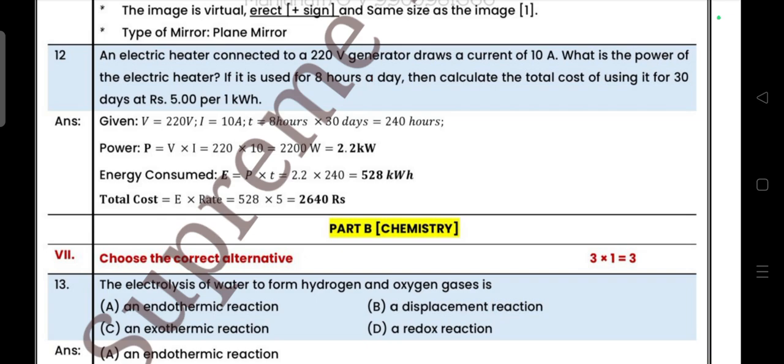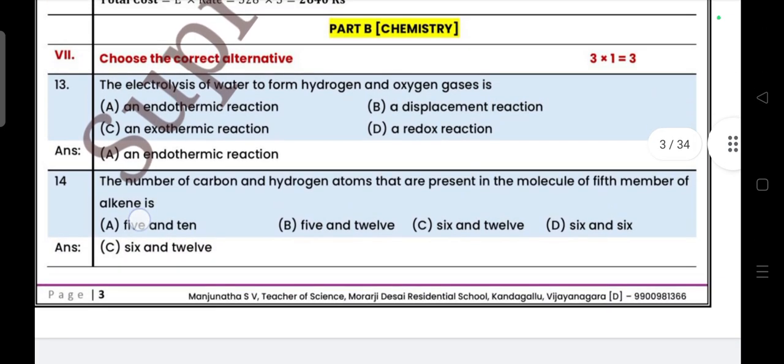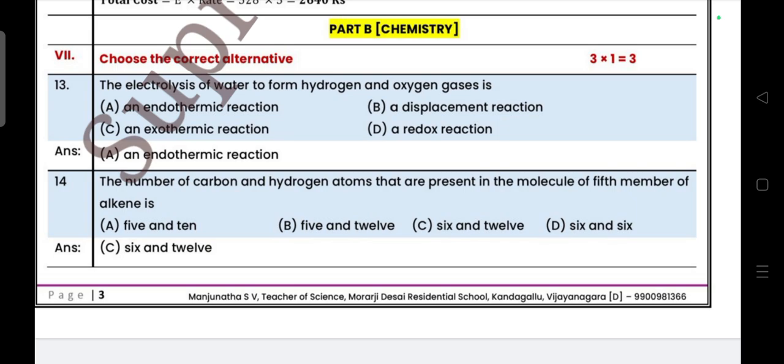Next, Part B Chemistry part, three multiple choice questions. The electrolysis of water to form hydrogen and oxygen gases is, answer is endothermic reaction. The number of carbon and hydrogen atoms that are present in the molecule of the fifth member of alkyne is 6 and 12.